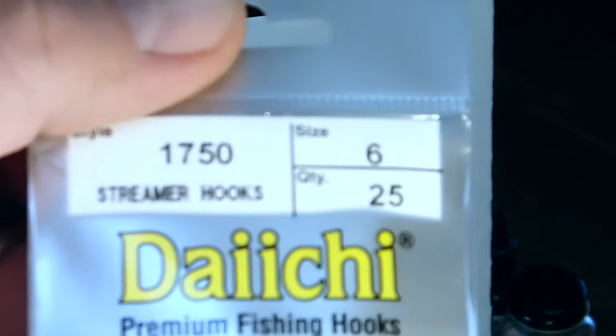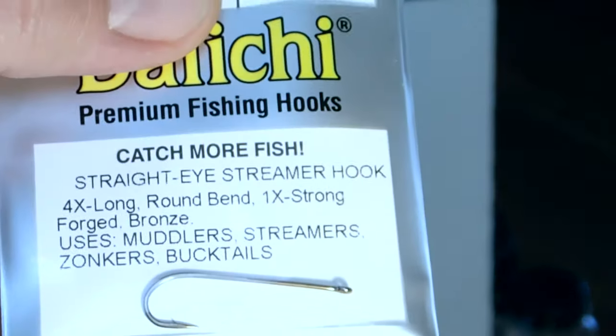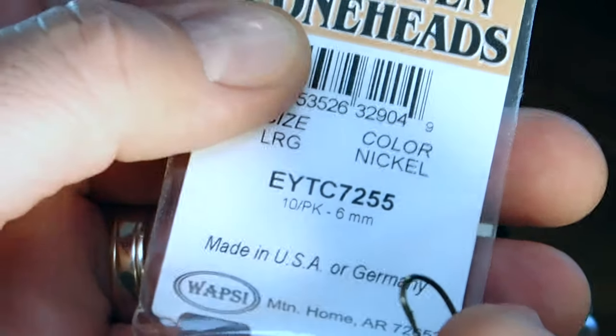I start with the Dai Chi hook. This is a size six. These are super sharp. Normally I use Temco, but we'll do Dai Chi for this.